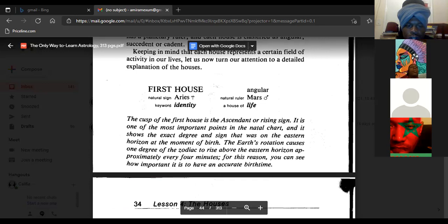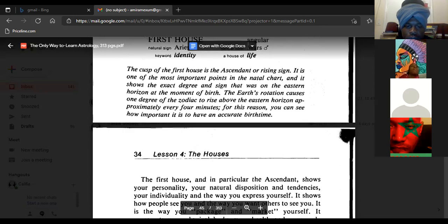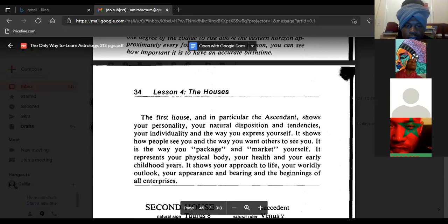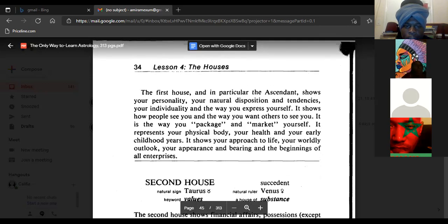It is one of the most important points in the natal chart and shows the exact degree and sign that was on the eastern horizon at the moment of birth. The earth's rotation causes one degree of the zodiac to rise above the eastern horizon approximately every four minutes. For this reason, you can see how important it is to have an accurate birth time.